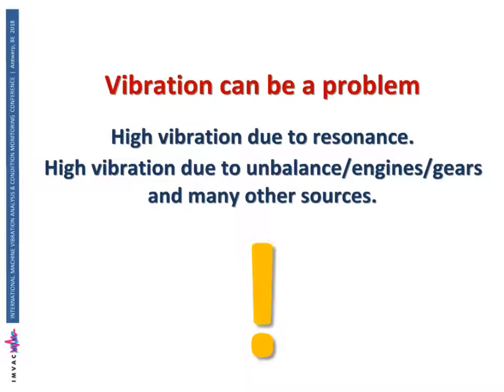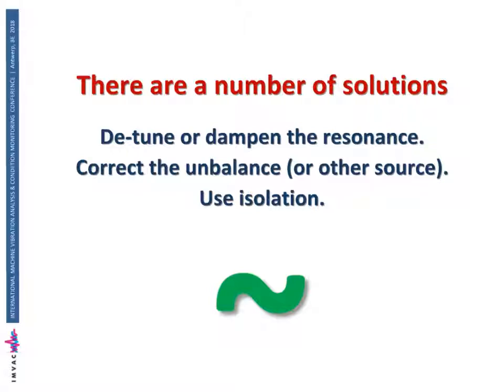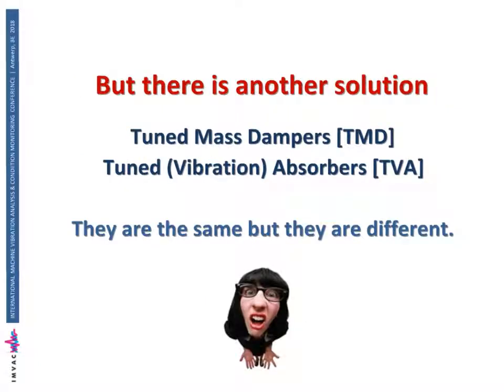As we are all aware, vibration can be a problem. The vibration may be due to resonance, or it might just be due to some unbalance or vibration from an engine or similar. There are a number of solutions: we may be able to detune the natural frequency, try to balance the machine, or use isolation so that vibration is not transmitted through the foundations. But sometimes vibration is just higher than desired and we can't easily control it, so another solution is to use a tuned mass damper or a tuned vibration absorber.